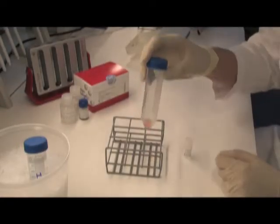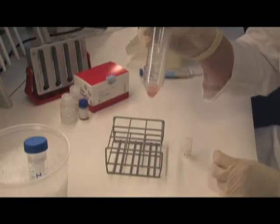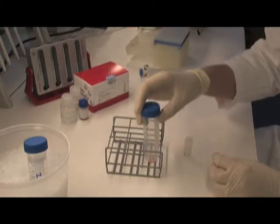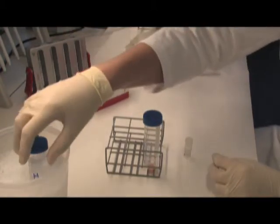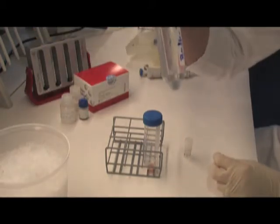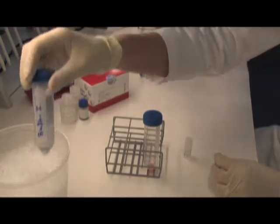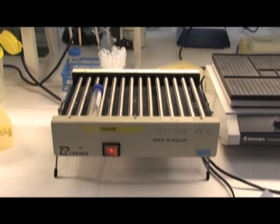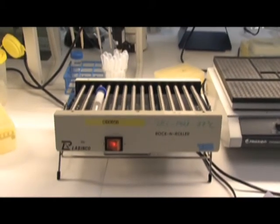Prepare a single cell suspension from lymphoid organs such as lymph nodes or spleen. Prepare approximately 10 mls of isolation buffer per 5 times 10 to the 7th cells. Re-suspend the beads on the rolling mixer for at least 5 minutes.